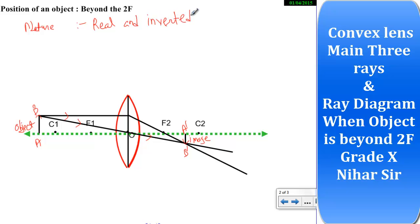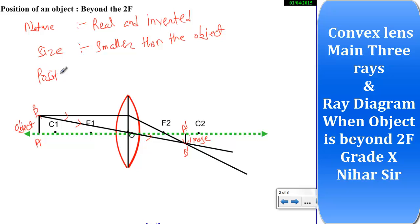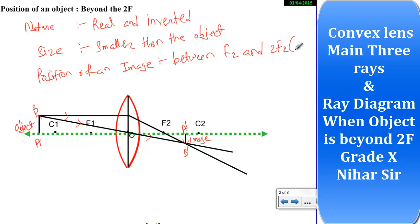The size of the image is smaller than the object. The position of the image is between F2 and 2F2 — and 2F2 is the same as C2. I hope you understood this ray diagram, how to draw the convex lens, and the three main rays. I tried to explain as clearly as possible. I hope you find this video useful — thank you so much for watching.